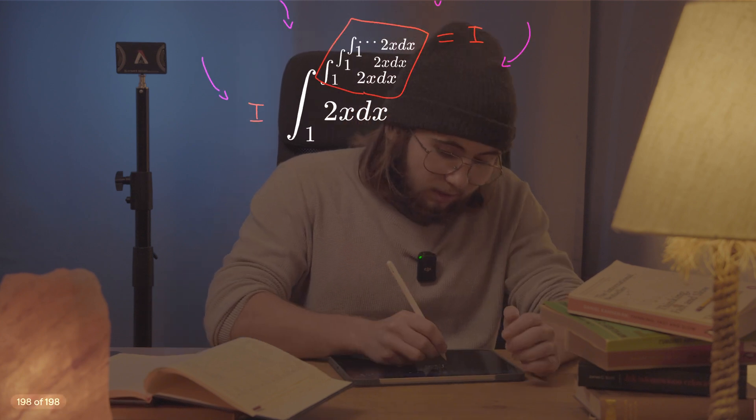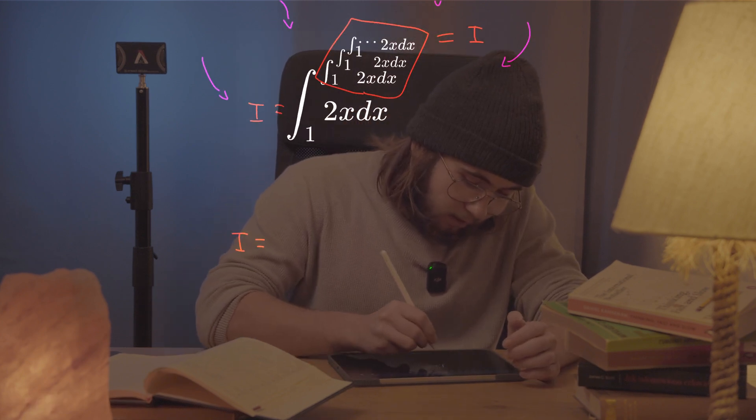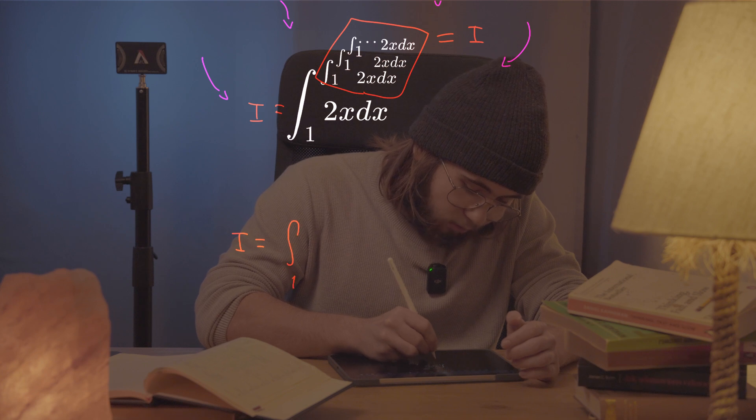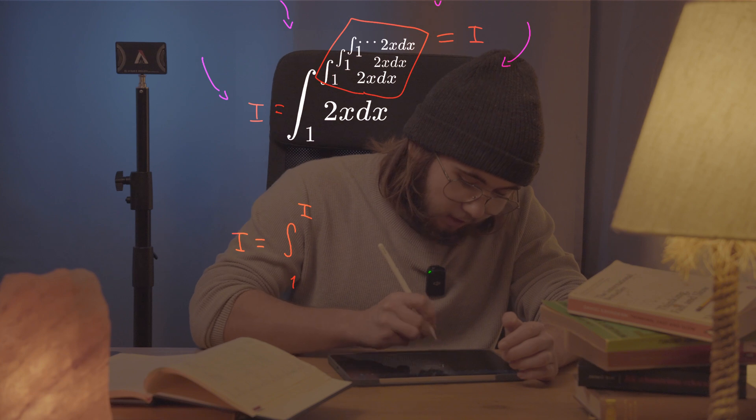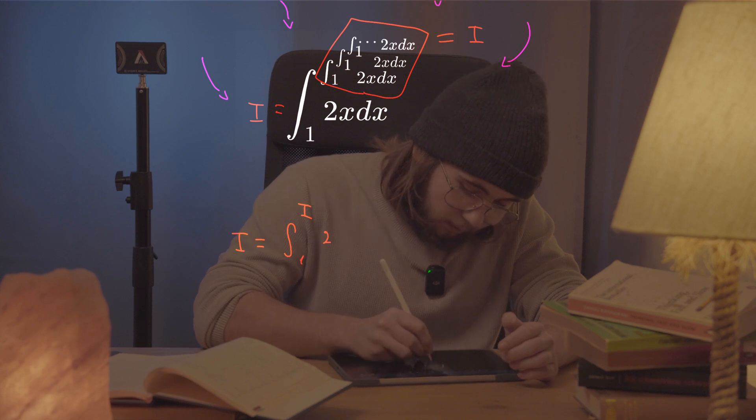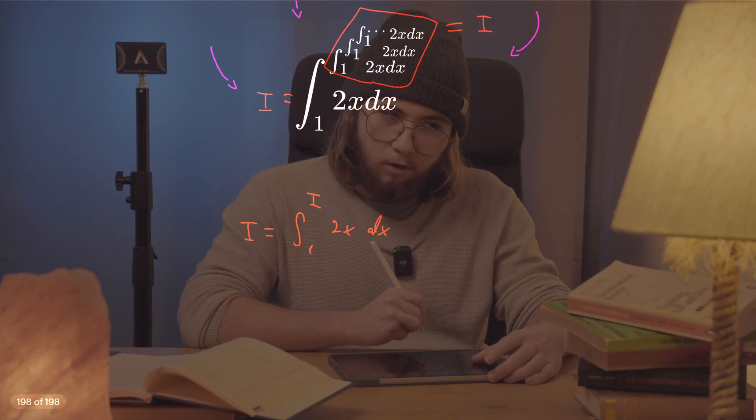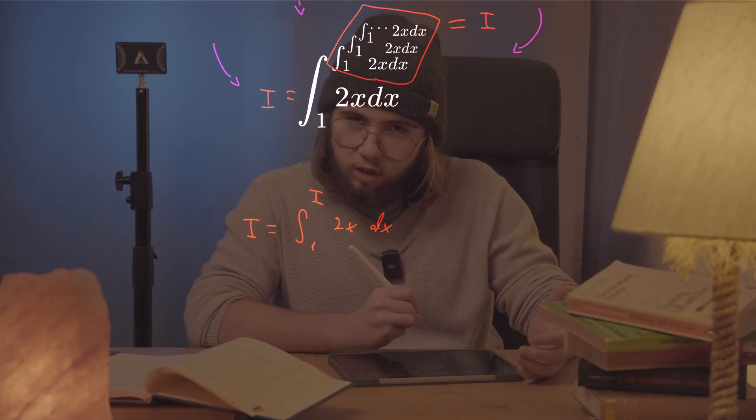of write that I is going to be equal to the integral from one to the integral from one up to I itself of 2x with respect to x. And so it actually gives us a quadratic equation